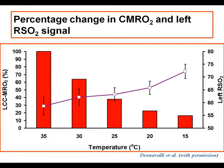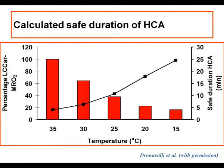By taking the safe arrest duration as 4 minutes at 35 degrees centigrade, we can calculate what each temperature component adds to the safe duration of HCA. At 30 degrees centigrade, the safe duration of HCA is only about 8 minutes. But at 15 degrees centigrade, the safe duration has risen to 25 minutes. So each degree of temperature fall is giving additive ischemic tolerance and safety for circulatory arrest.